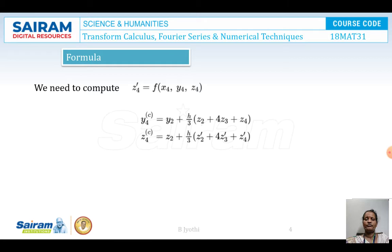We need to compute z4-dash, that is f(x4, y4, z4). The corrector formula y4(c) is given by y2 plus (h/3) times (z2 plus 4z3 plus z4), and z4(c) is given by z2 plus (h/3) times (z2-dash plus 4z3-dash plus z4-dash).